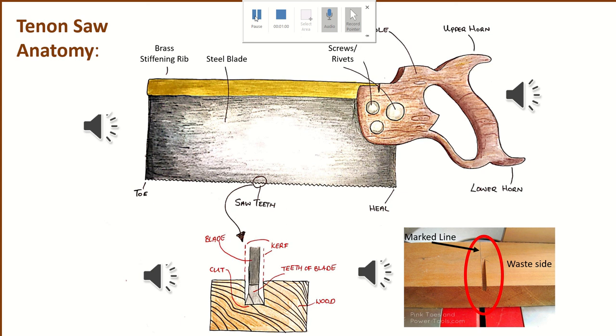If you go down now to the very bottom of this slide, you can see a picture of the blade cutting through a piece of wood. What that is representing is that on a tenon saw, the teeth are actually set wide around the blade, which is different to a lot of saws.